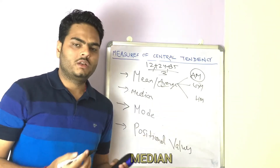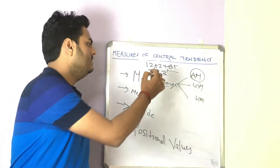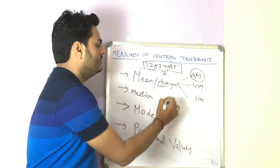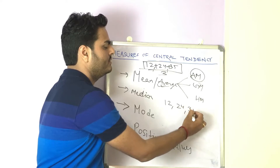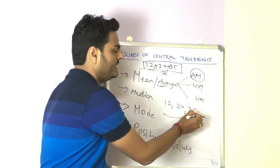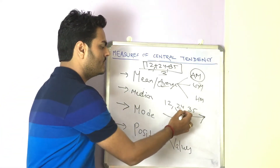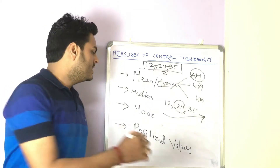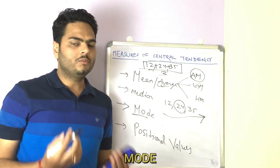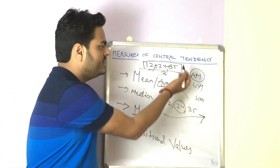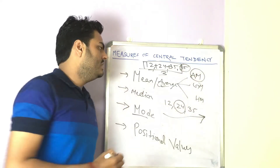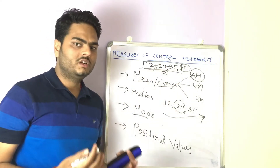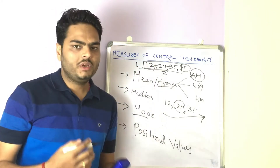Median is the middle number of the sorted population. For example, if we sort the population in ascending order — 12, 24, and 35 — the middle number is 24, so 24 becomes the median. Coming to mode: mode is the most occurring number in a population. For example, if this population has another 35, since 35 occurs twice, 35 becomes the mode. A population can have more than one mode. So these are mean, median, and mode.